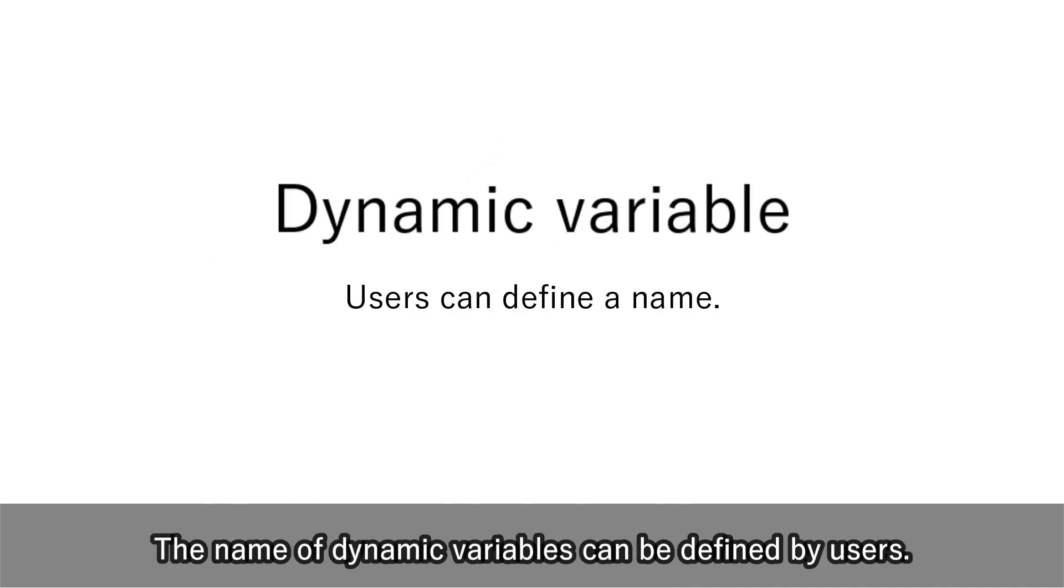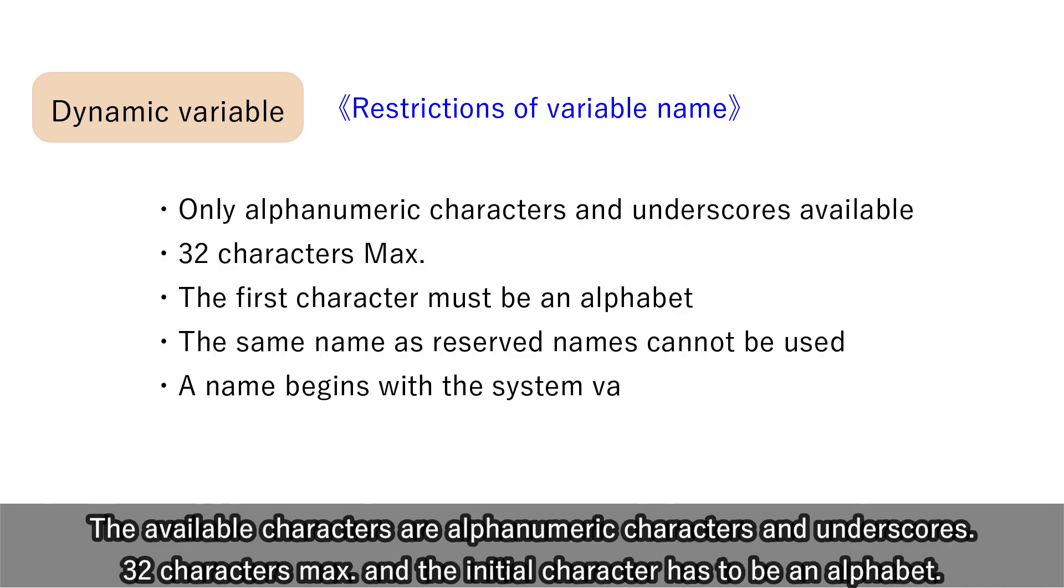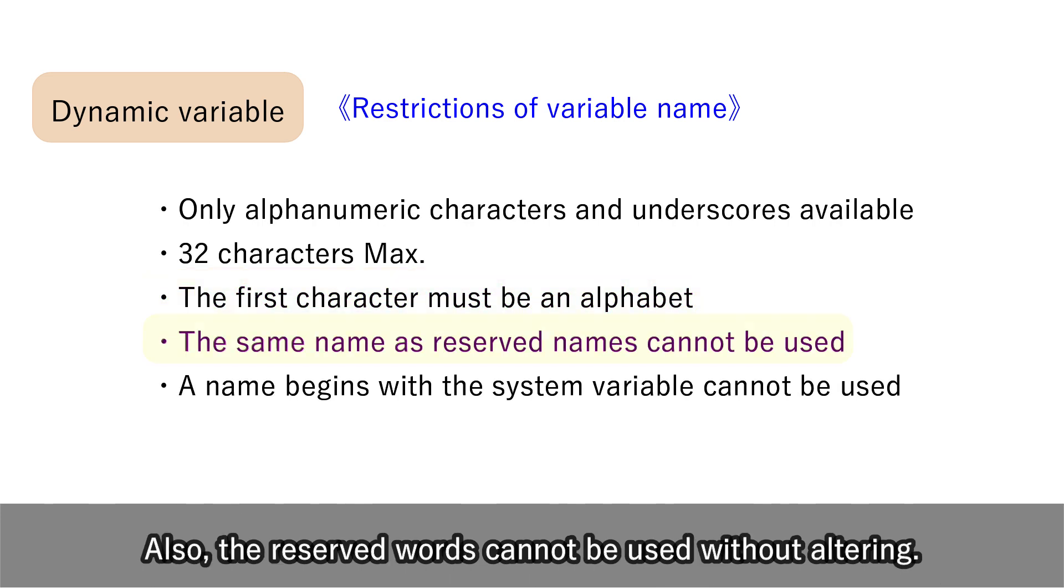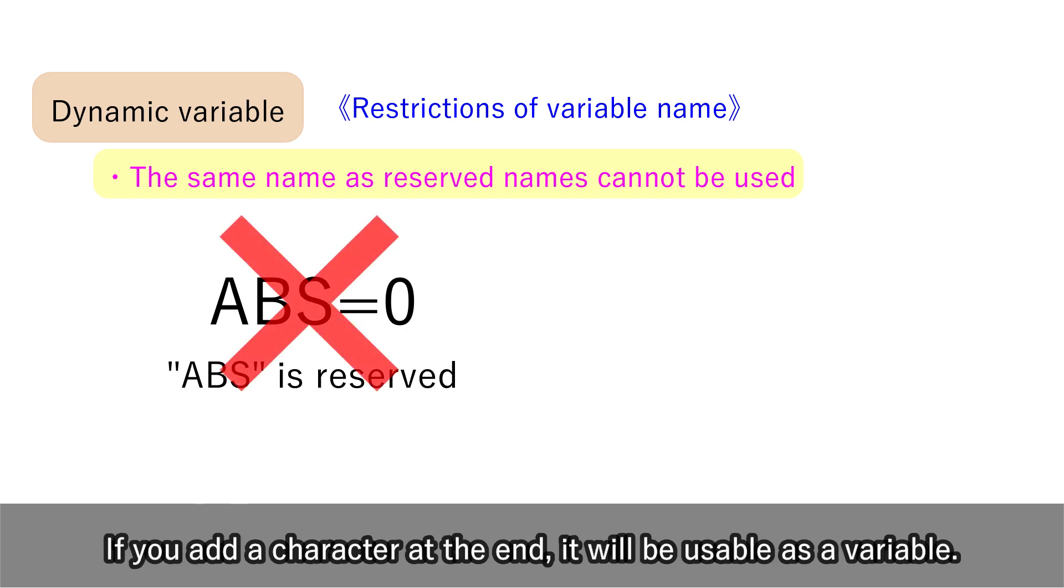The name of dynamic variables can be defined by users. However, there are restrictions of naming. The available characters are alphanumeric characters and underscores, 32 characters maximum, and the initial character has to be an alphabet. Also, the reserved words cannot be used without altering. If you add a character at the end, it will be usable as a variable.